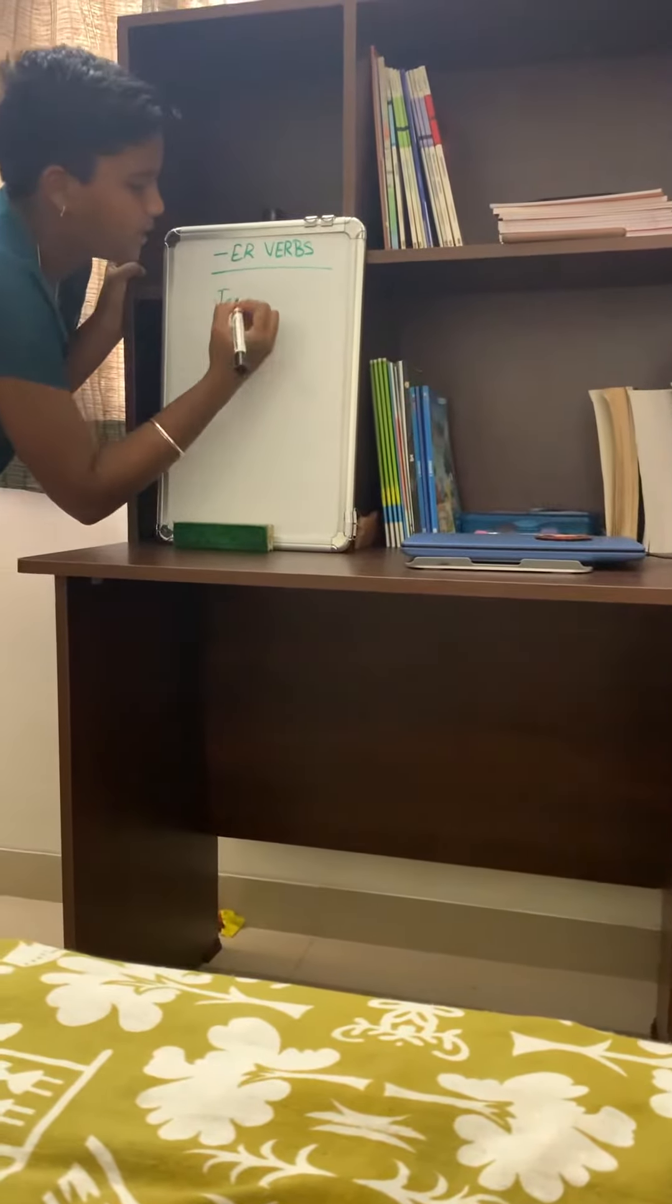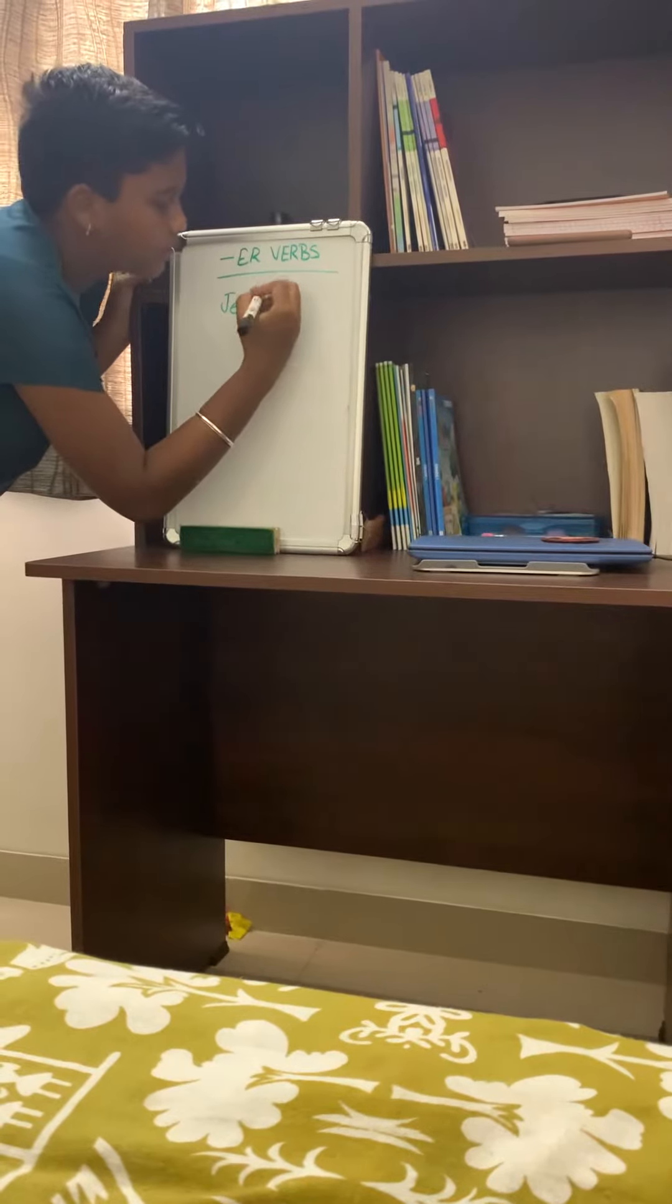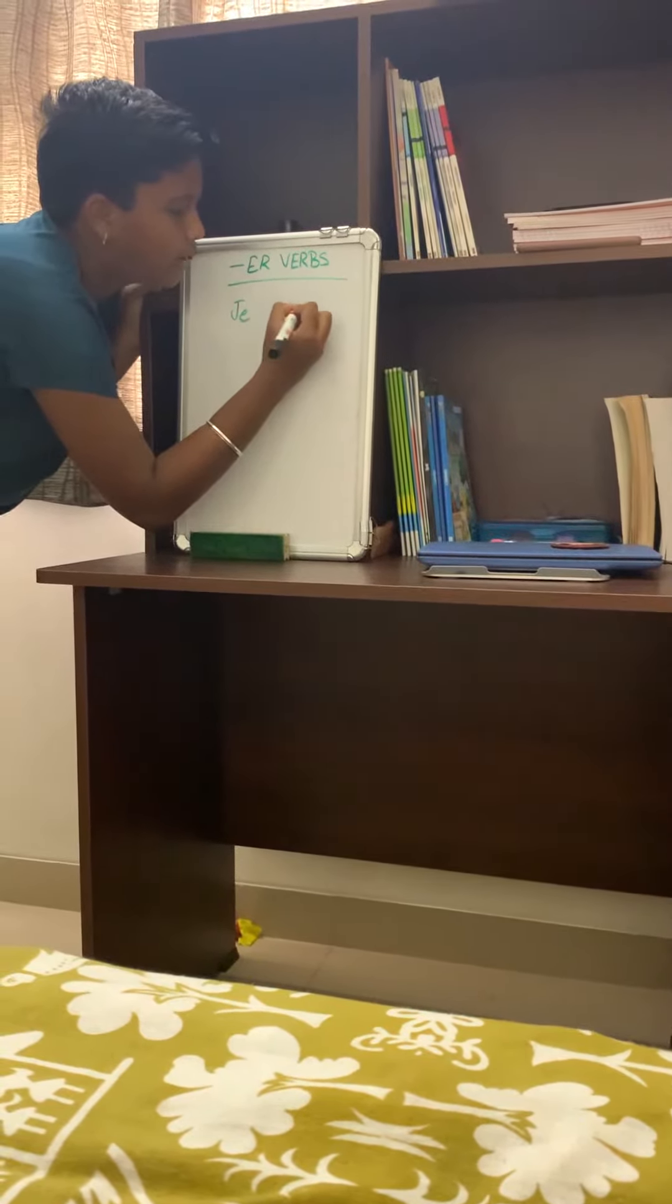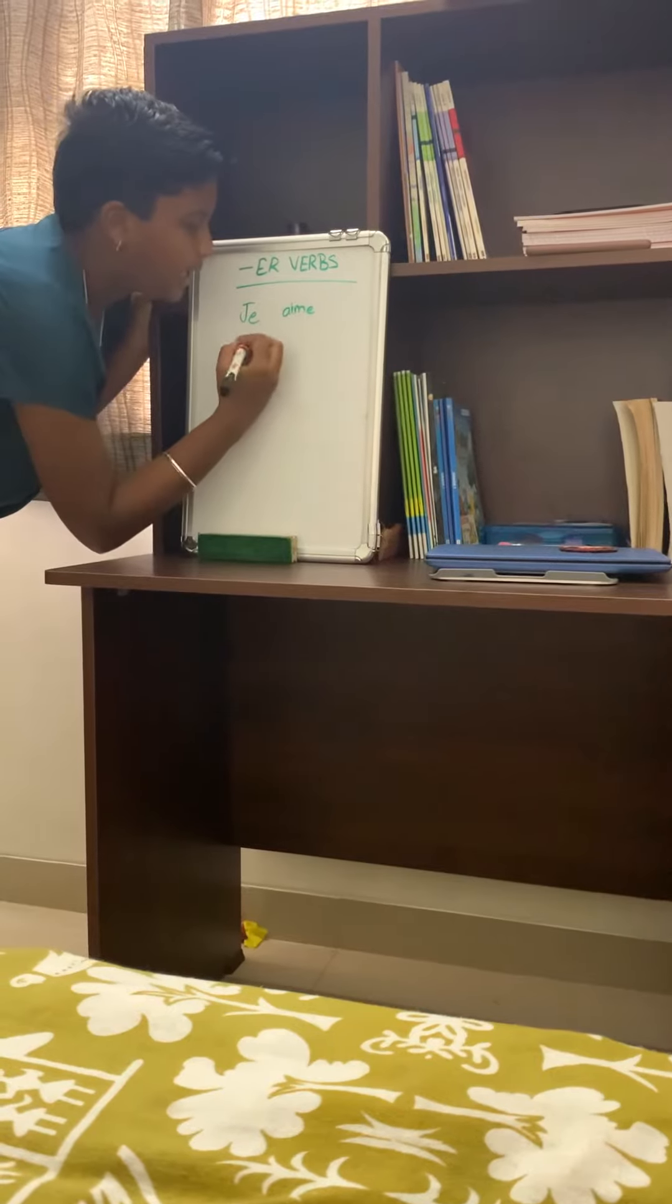Je, which means I in English, is conjugated as J'aime, where we add an E at the end.